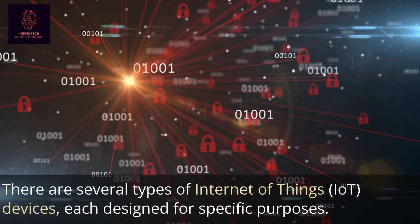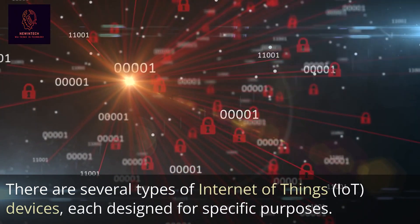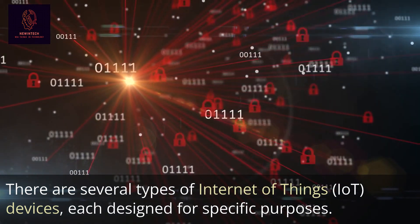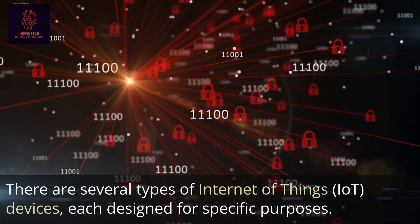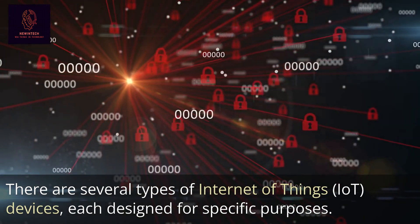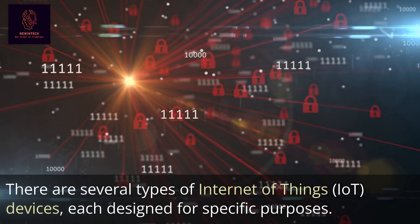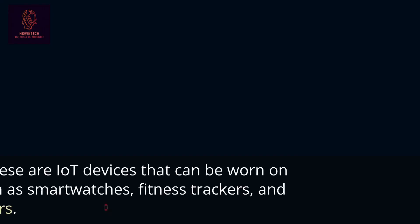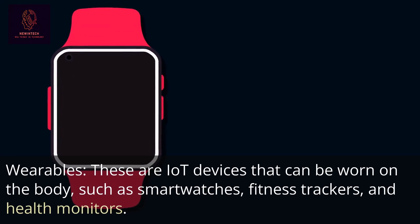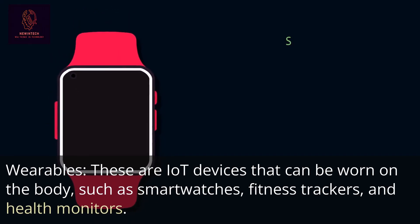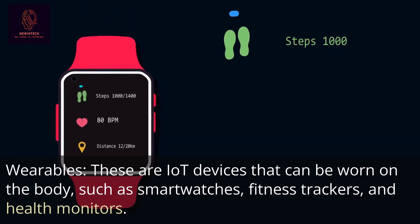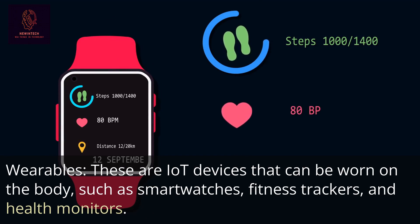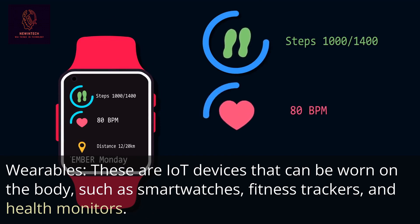There are several types of Internet of Things, IoT, devices, each designed for specific purposes. Here are some common IoT types. Wearables: these are IoT devices that can be worn on the body, such as smartwatches, fitness trackers, and health monitors.